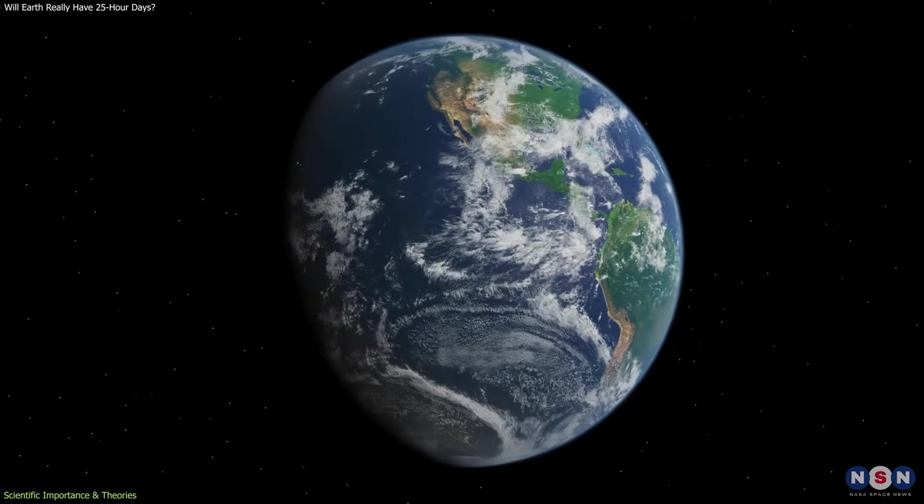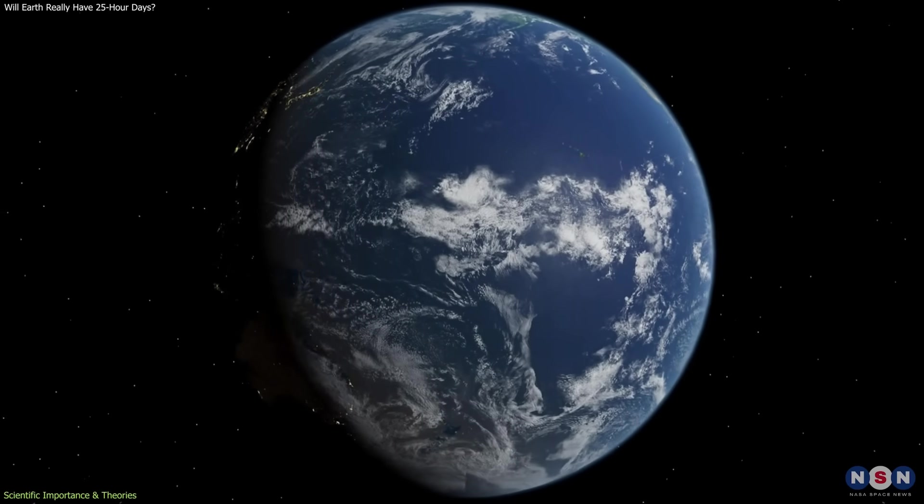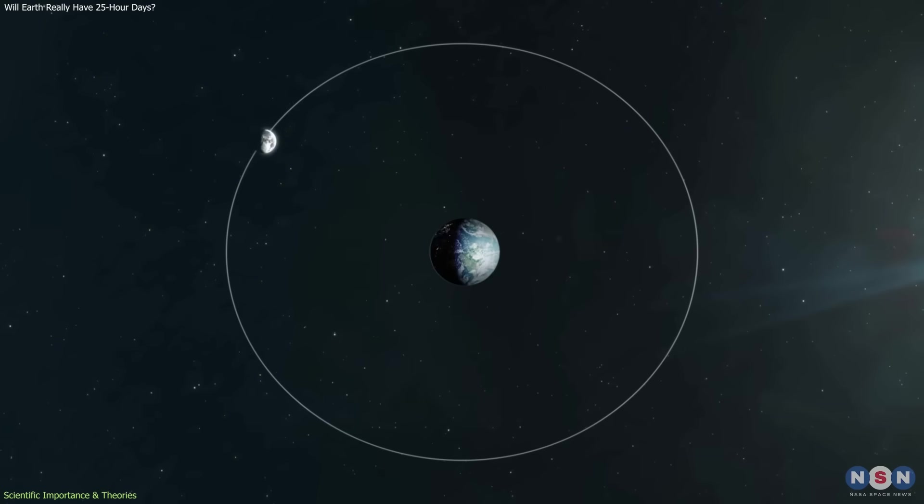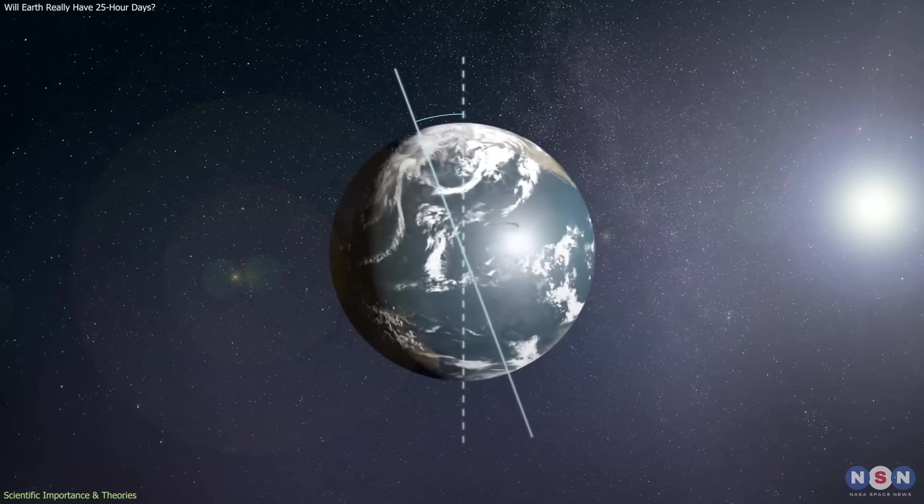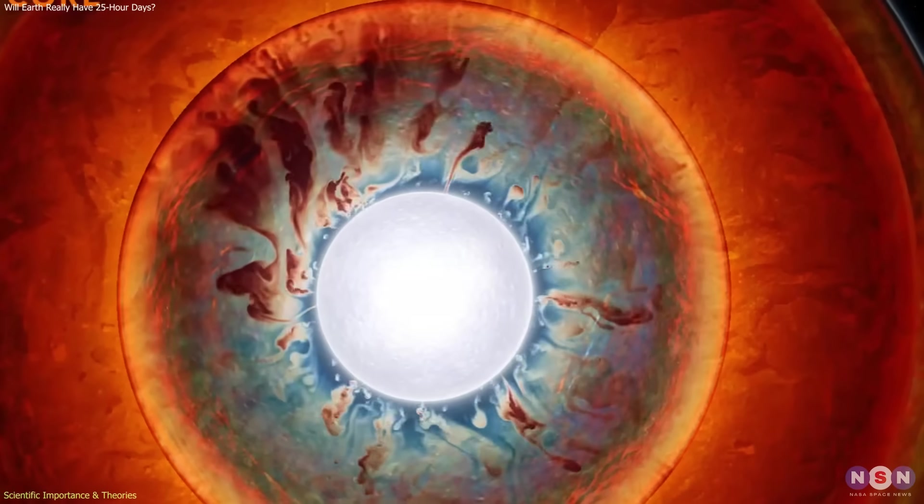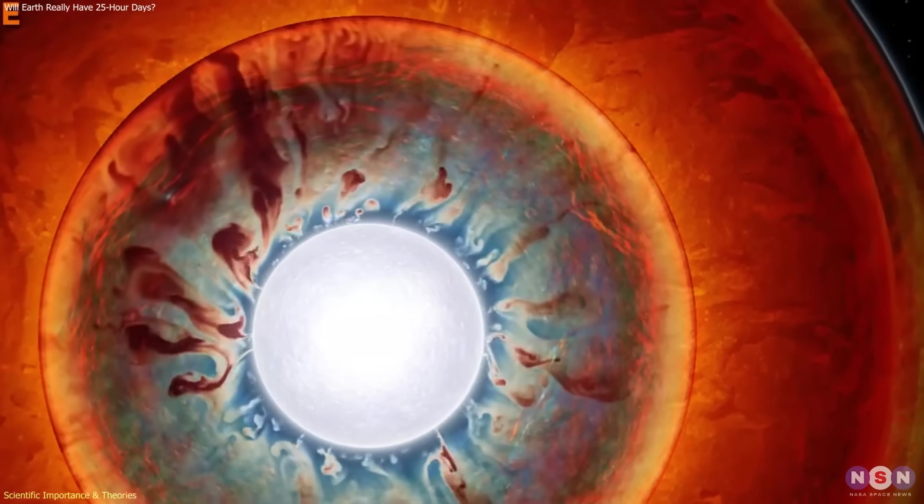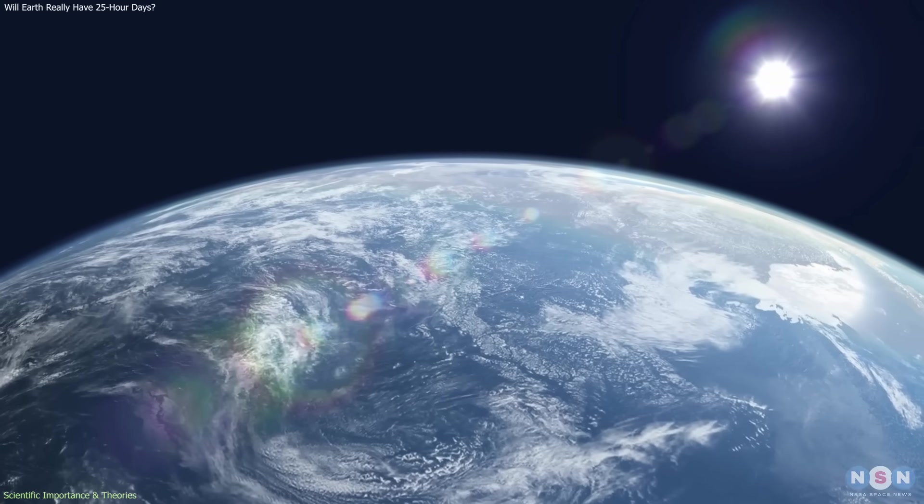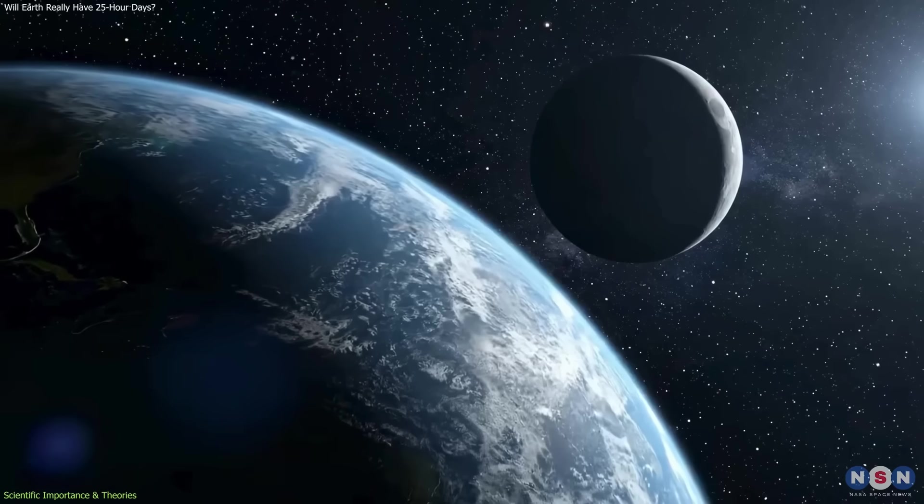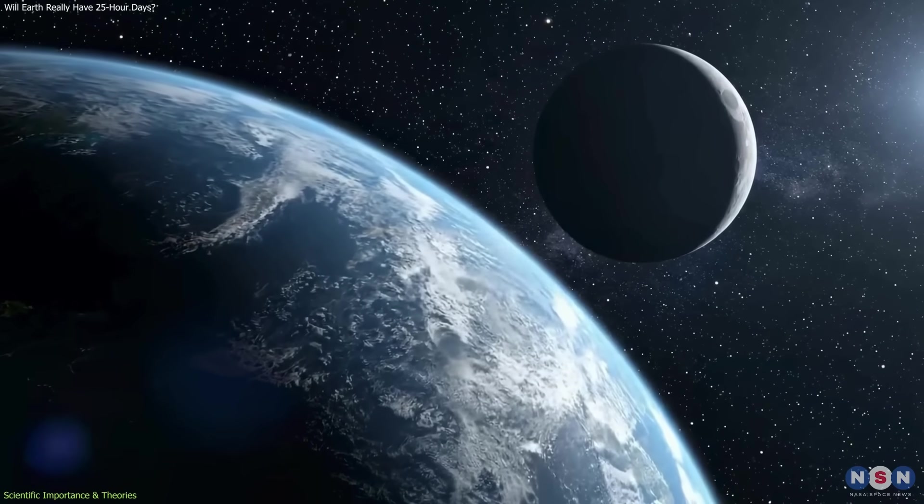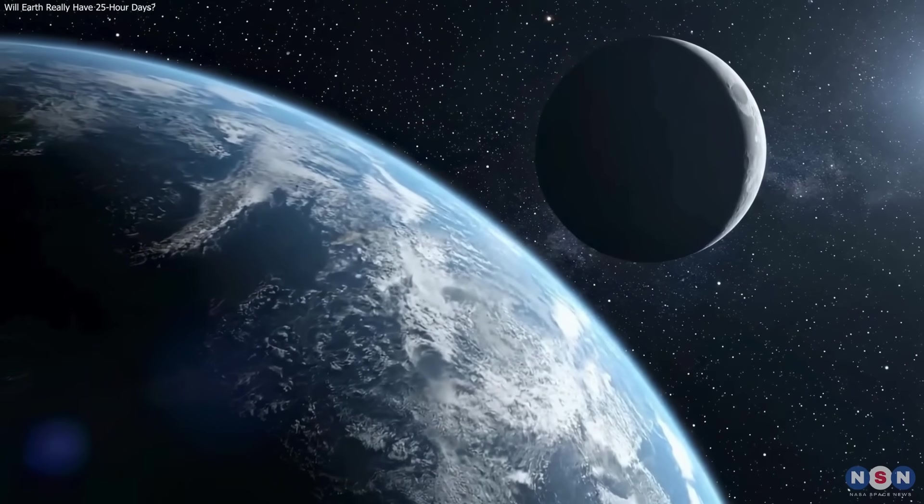From a scientific standpoint, Earth's rotation acts as a sensitive probe. By tracking tiny changes in spin rate and axis orientation, researchers gain insight into processes occurring in Earth's interior, oceans, and climate system. Rotation data provides an independent way to study how different parts of the planet interact over time.